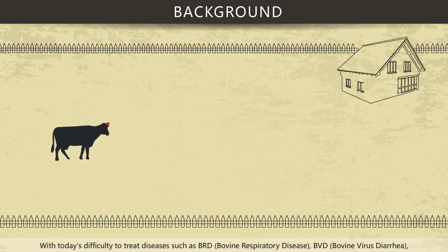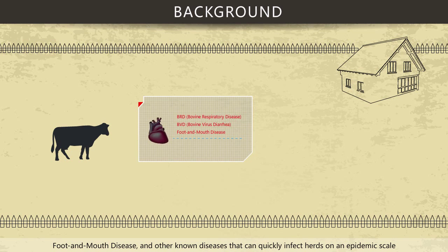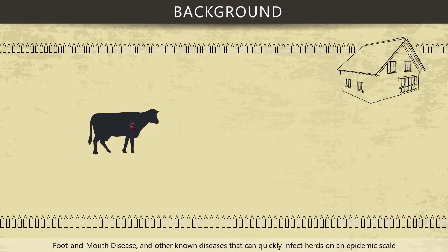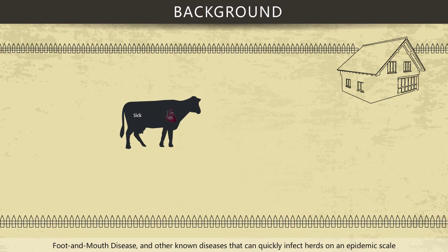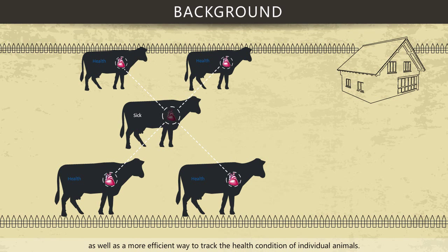With today's difficult-to-treat diseases such as BRD (bovine respiratory disease), BVD (bovine virus diarrhea), foot and mouth disease, and other known diseases that can quickly infect herds on an epidemic scale, it is now important to have rapid, real-time reporting of large-scale disease outbreaks, as well as a more efficient way to track the health condition of individual animals.